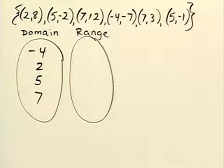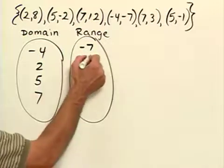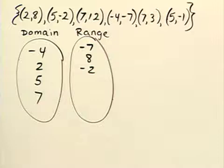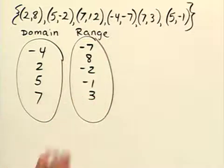Our range, remember, is a set of y-coordinates. So in the range circle here we need negative 7, 8, negative 2, negative 1, 3, and 12.